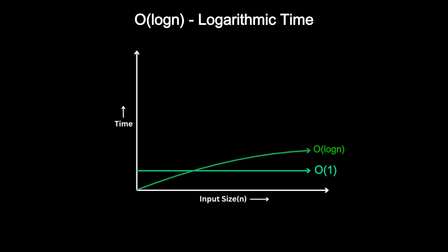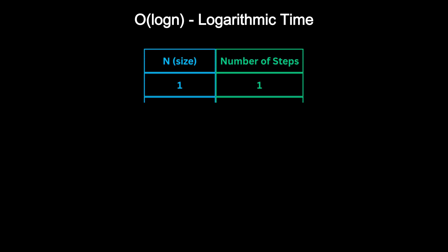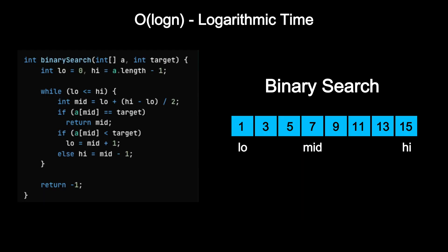Next up is logarithmic time or O(log n). An algorithm runs in O(log n) time when every step reduces the problem size by a constant factor, most often by half. This means the amount of work grows very slowly, even when the input becomes massive. The most common example is binary search. Each step discards 50% of the remaining data.